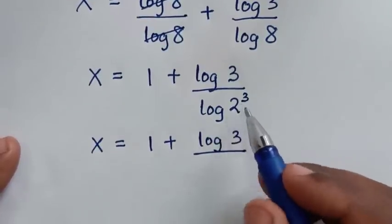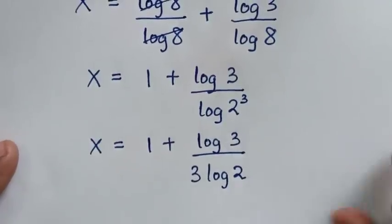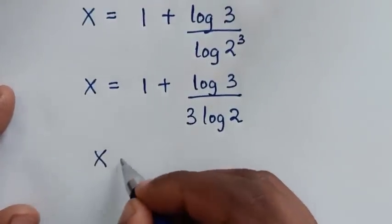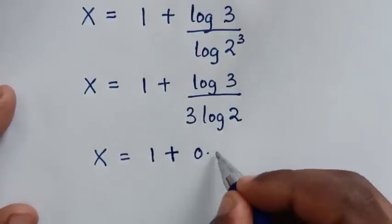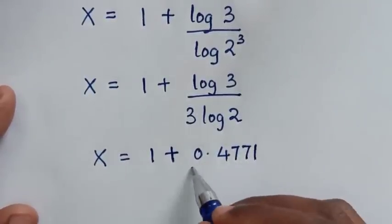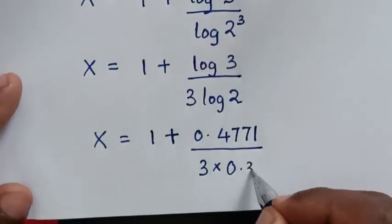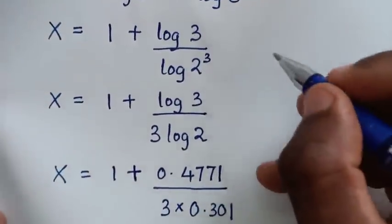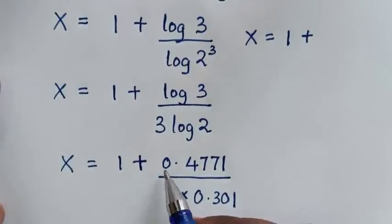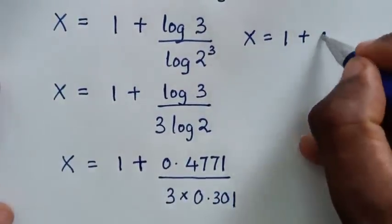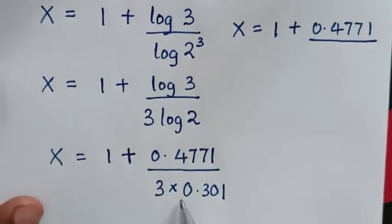So it becomes x is equal to 1 plus log of 3 over log of 2 to the power of 3. This power of 3 moves to the front, giving 3 times log of 2 in the denominator. Substituting values: log of 3 is 0.4771 and log of 2 is 0.301, so the denominator is 3 times 0.301.